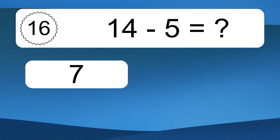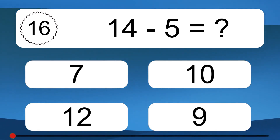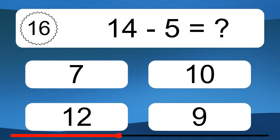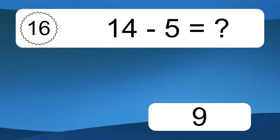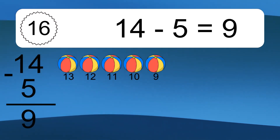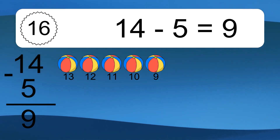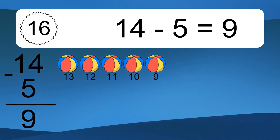14 minus 5 equals what? 14 minus 5 equals 9. Let's count it: 13, 12, 11, 10, 9.